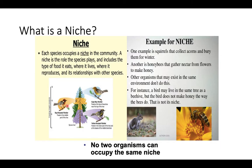No two organisms can occupy the same niche, even if they are closely related — like these warbler birds. Even though they are different species of warblers living in the same spruce tree, they live in different parts of it, so they have a different habitat. They may reproduce at different times of the year and feed on different food sources.